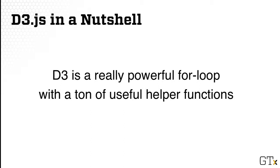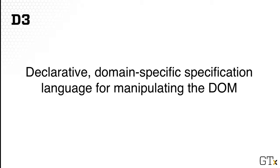In a nutshell, D3 is what we would call a very powerful for loop with a lot of useful helper functions. It's a for loop in the sense that it can do a lot of things for you automatically, and it provides fantastic helper functions to simplify your life. More technically, D3 can be thought of as a declarative domain specification language for manipulating the DOM — the Document Object Model — meaning how you manipulate an HTML document for visualizing data.